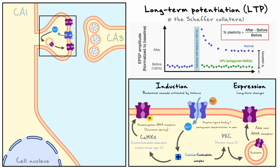The second important target for plasticity is the receptors themselves, which can get phosphorylated, causing the channels to open more and let more current enter. This form of LTP lasts only a few hours and has thus been called early LTP. However, there are forms of LTP called late LTP that can last even longer, but they require gene expression and protein synthesis to happen.